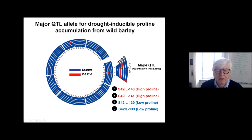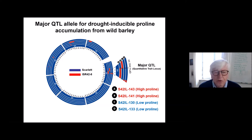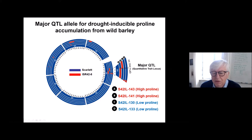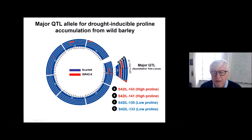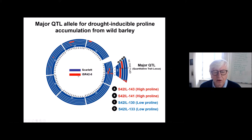We concentrated on two lines that showed high proline after stress — these are the A and B genotypes shown here — while two other lines show no increase in proline. You can recognize that both high-proline lines share a small common segment from the wild form at the same genomic region, suggesting this region is responsible for the elevated proline.